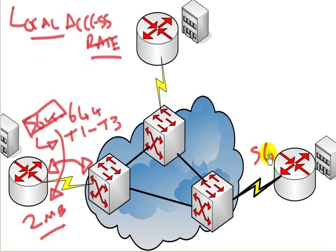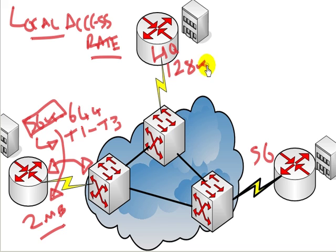For example, say you paid for a 56k connection at a branch, but at your headquarters router you may pay for a 128k connection because you're getting more traffic from two different sides. That said, 128k is becoming less and less common nowadays given the amount of traffic going through, including voice, data, video, and video conferencing.